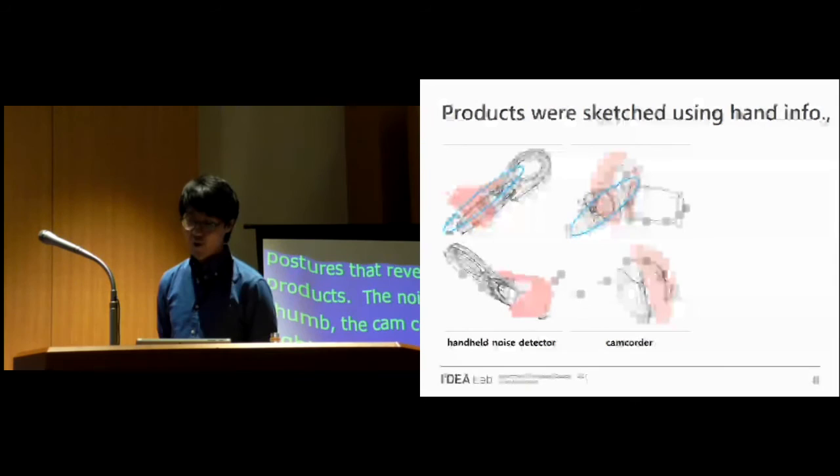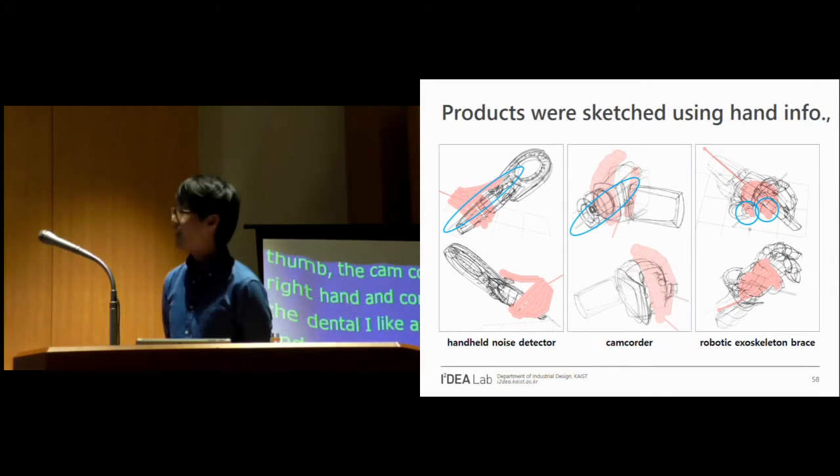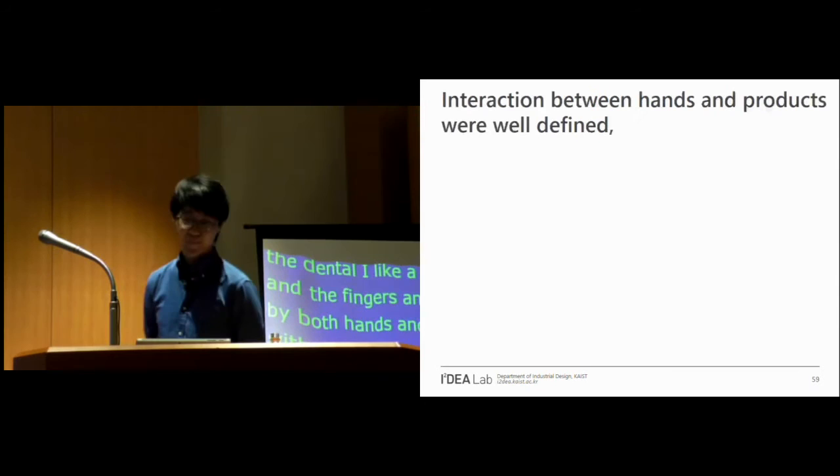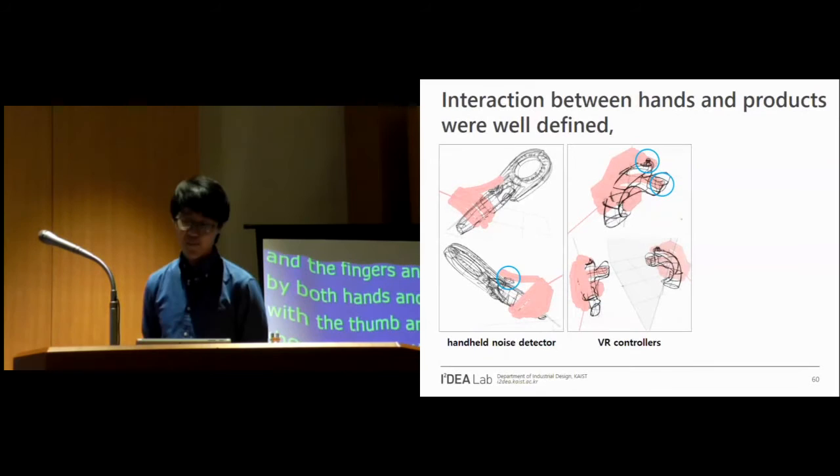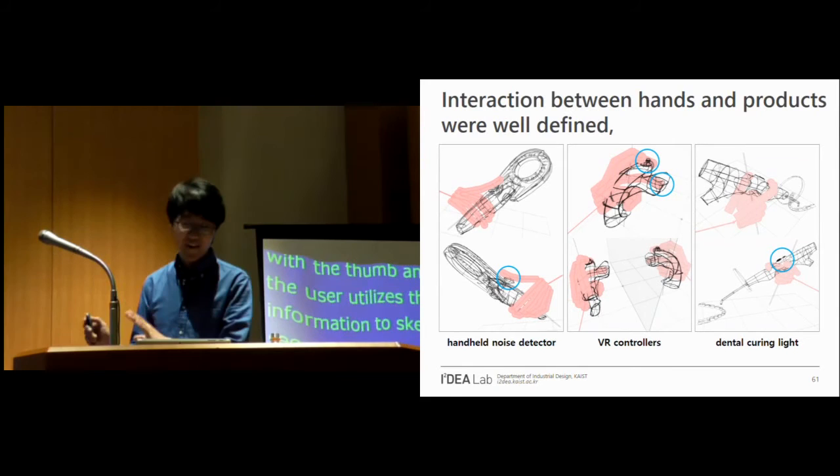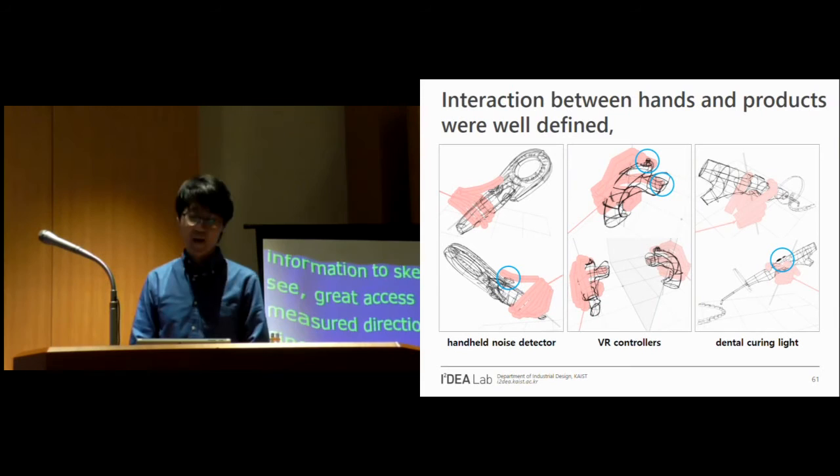As you can see, grip axes were well used to give major directionality of each product. Also finger bones are used to draw section sketches in tight shapes. Also in many sketches the joystick and buttons are placed under the fingers. On the other hand, the power button of the dental light here is intentionally placed at a distance from the fingertips to prevent the user from pressing the button by mistake.